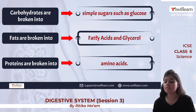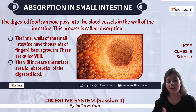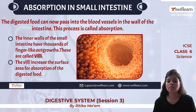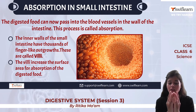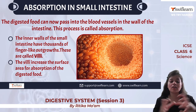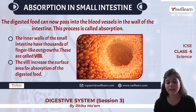Absorption in the small intestine occurs as digested food passes into blood vessels in the intestinal wall. The inner walls of the small intestine have finger-like projections called villi, which increase the surface area for absorption of digested food.